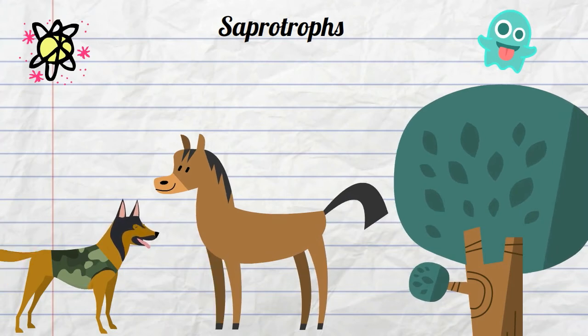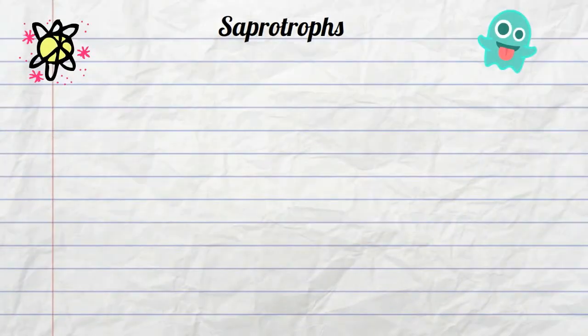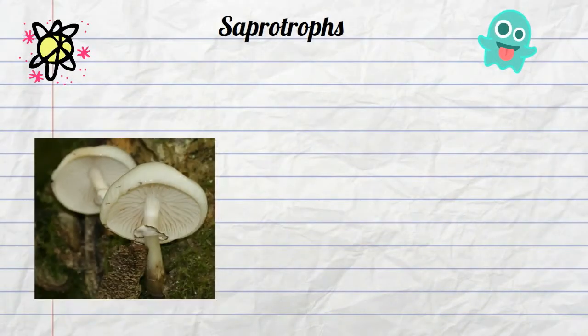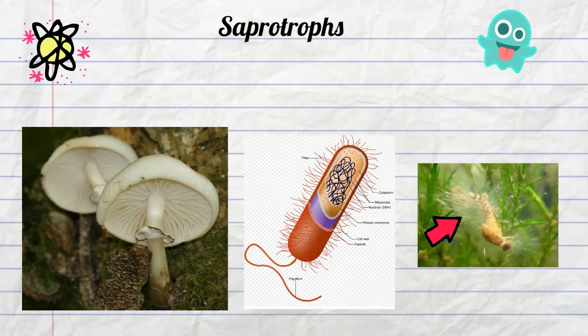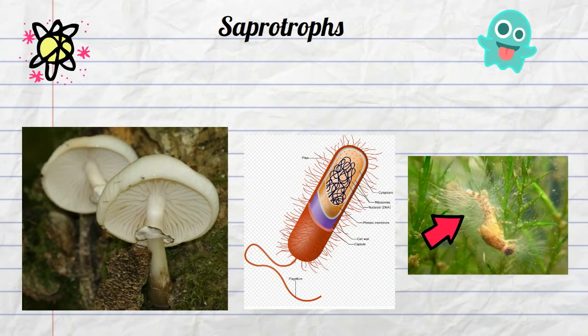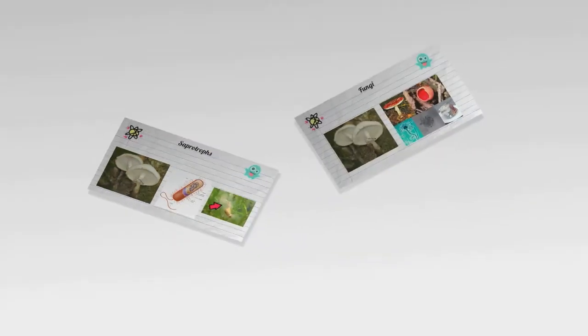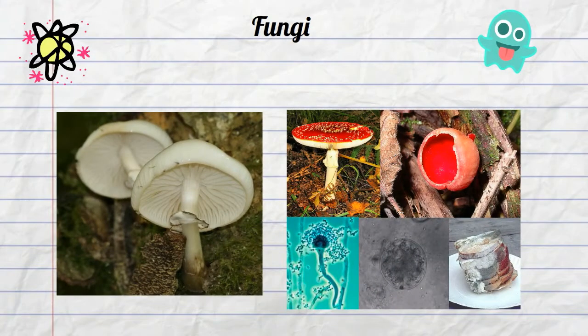There are at least three major groups of Saphrotrophs: Fungi, Bacteria, and Water Mold. Fungi are organisms that secrete enzymes on non-living matter. These enzymes break down the matter and then the fungi absorb important nutrients. The most common examples of fungi are mushrooms.